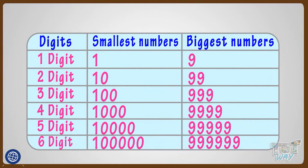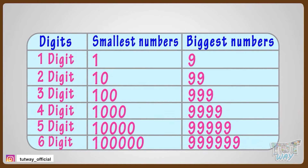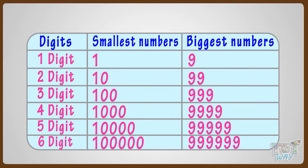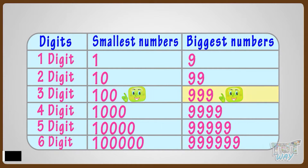Kids, here is an interesting pattern to learn — the smallest and biggest numbers of particular digits. The smallest one-digit number is 1, and the biggest is 9. The smallest two-digit number is 10, and the biggest is 99. The smallest three-digit number is 100, and the biggest is 999. And so on.